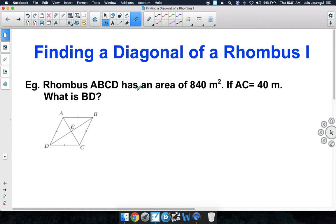Okay, so let's go ahead and see what we're given. We're given that the area is equal to 840 square meters. Also, we're given that the length AC is equal to 40 meters. So looking at the diagram, we have AC is the whole diagonal here. That is equal to 40 meters.